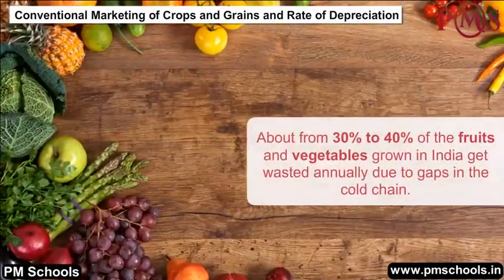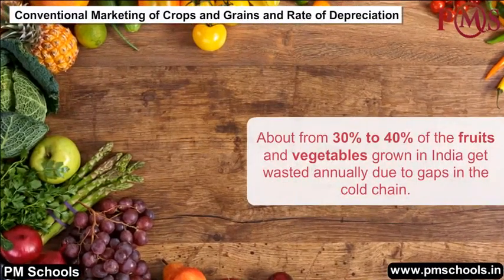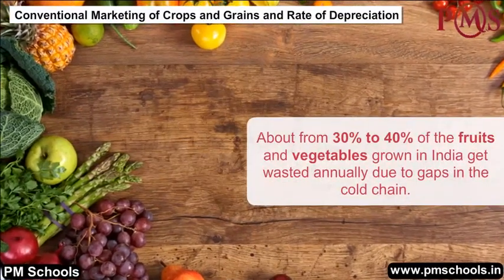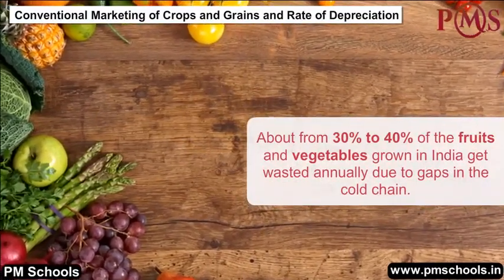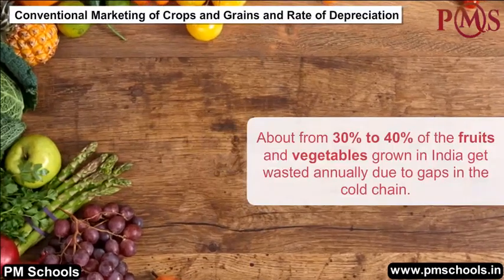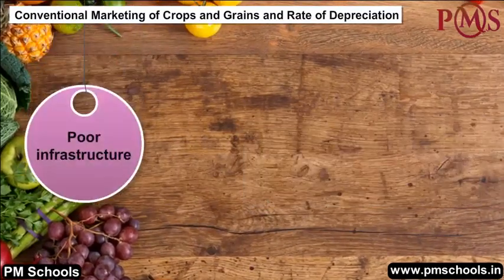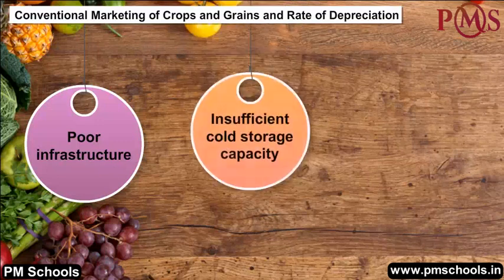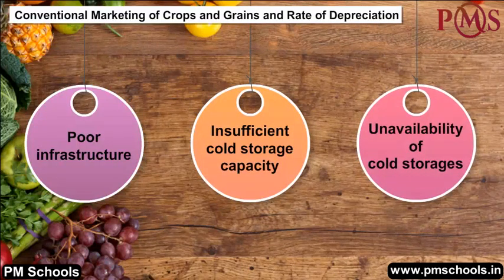About 30% to 40% of the fruits and vegetables grown in India get wasted annually due to gaps in the cold chain, such as poor infrastructure, insufficient cold storage capacity, and unavailability of cold storages.